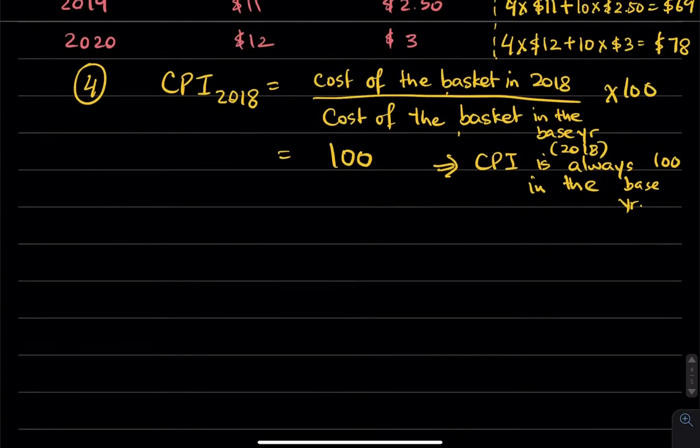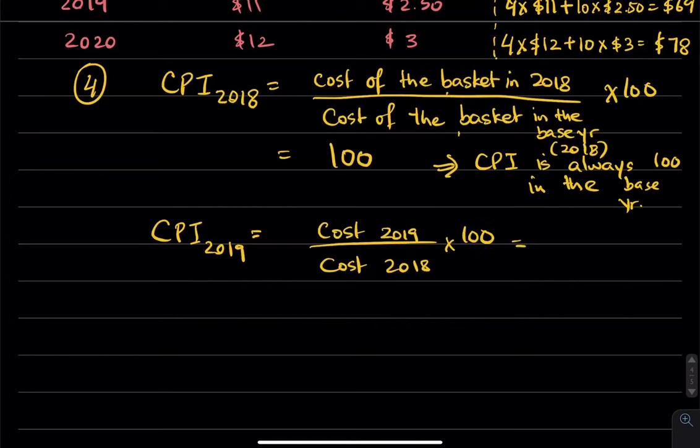Let's calculate the CPI in 2019. You're going to take the cost of the basket in 2019, divided by the cost of the basket in the base year, which is 2018, times 100, which is equal to $69 divided by $60, times 100. Notice the dollar signs cancel, and you're left with a number, which is 115.